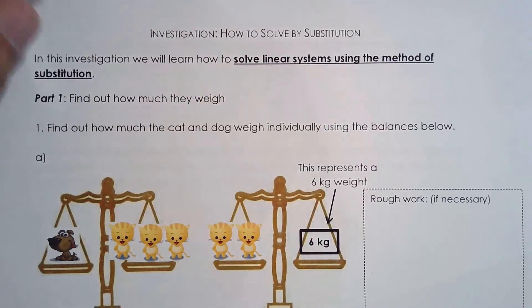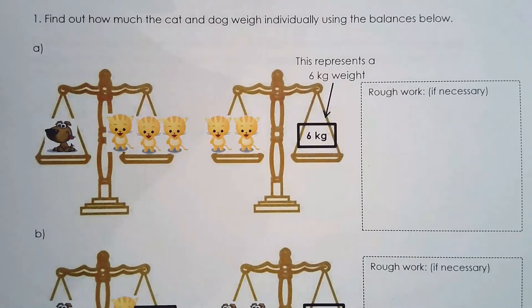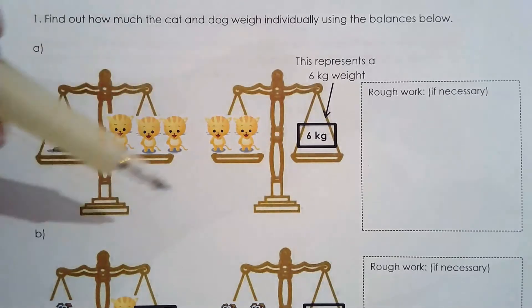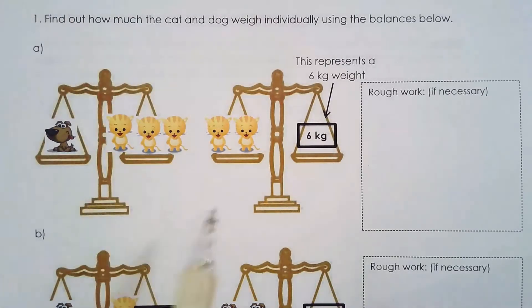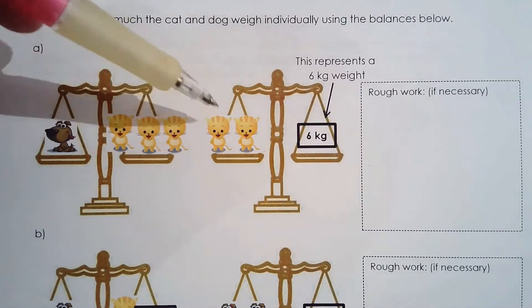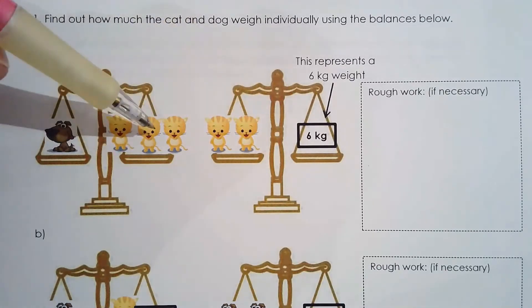Before I show you substitution, I want you to look at these puzzles — you see them in puzzle books. This is basically the method of substitution in a nutshell. We have scales showing that the left side and right side are balanced, so they have the same mass. Two cats is six kilograms, and three cats is one dog.